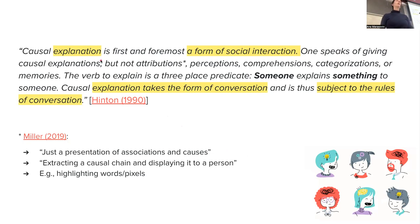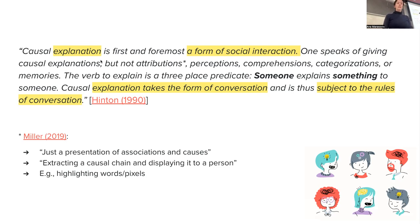Causal explanation — you can think about it as explanation the way we talked about it in this course — he says is first and foremost a form of social interaction, which is a very different view of what explanation is than in machine learning. He says one speaks of giving causal explanations, but not attribution, perceptions, comprehensions, categorizations, or memories. The verb 'to explain' is a three-place predicate: someone explains something to someone. Causal explanation takes the form of conversation that is subject to the rules of conversation.